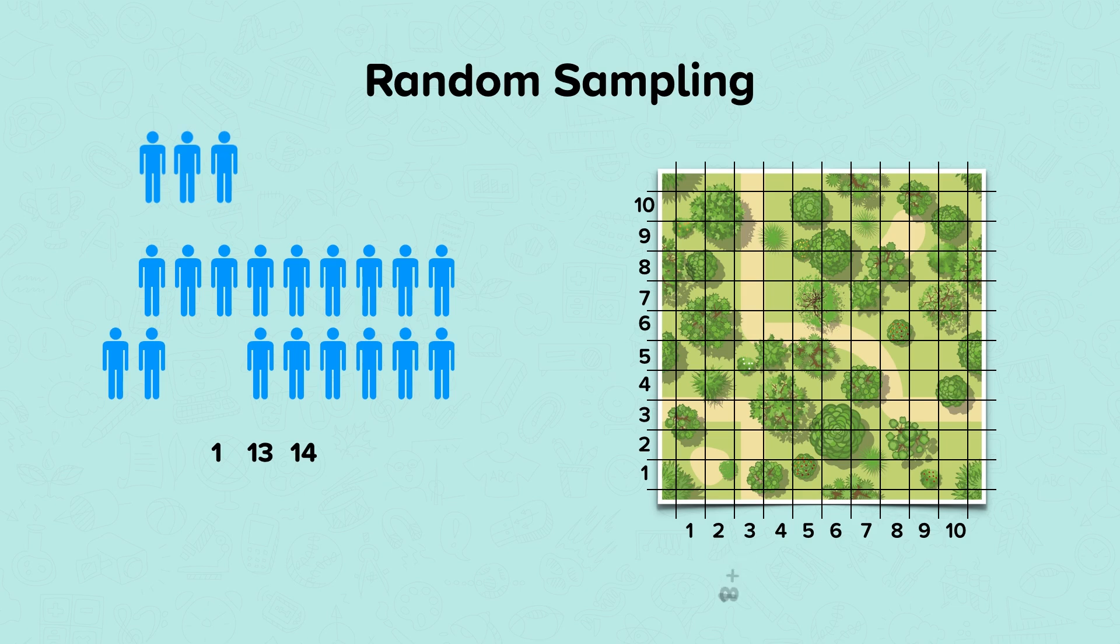These numbers can then be used to identify people as grid coordinates, measurements along a transect, or any way that works for your study.